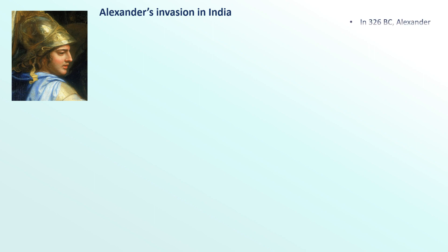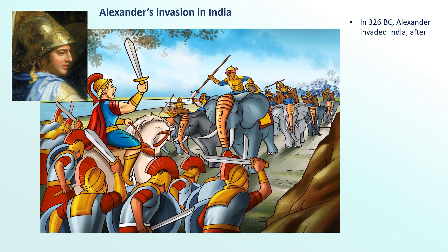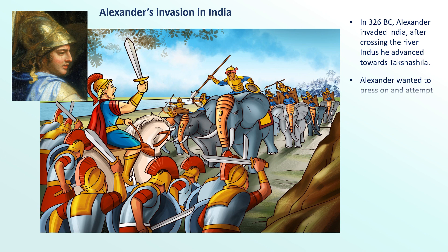In 326 BC, Alexander invaded India. After crossing the river Indus, he advanced towards Takshashila. Some tribes surrendered peacefully; others did not. The Indians were defeated in the fierce battle. Alexander wanted to press on and attempt to conquer all of India, but his war-weary soldiers refused and his officers convinced him to return to Persia.